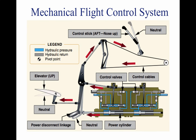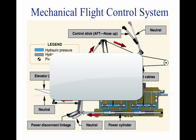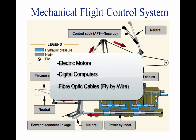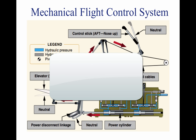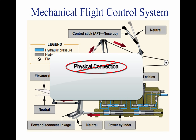As technology progressed even further, modern aircraft are controlled by electric motors, digital computers, or fiber optic cables called fly-by-wire systems. This flight control system replaces the physical connection between pilot controls and the flight control surfaces with an electrical interface.